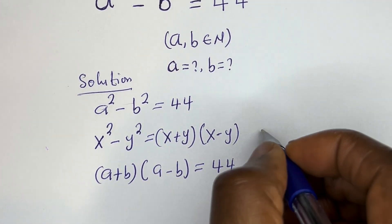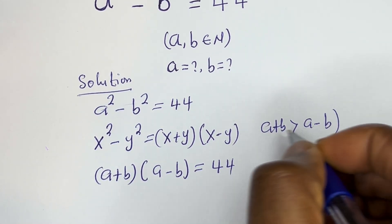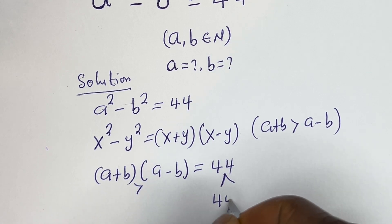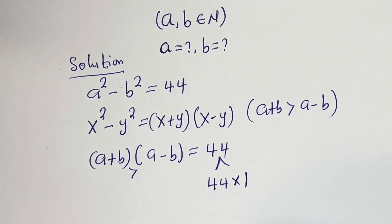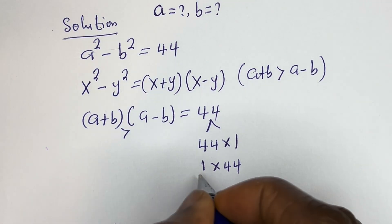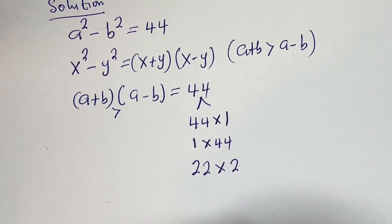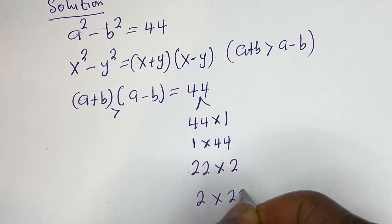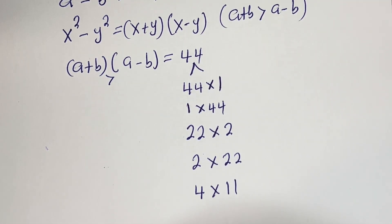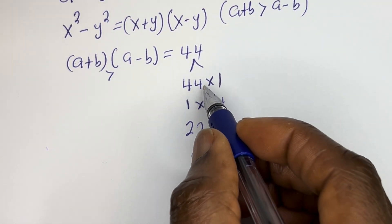From here, note that a plus b is greater than a minus b. We need to look for the factor pairs of 44. 44 is a product of 44 × 1, 22 × 2, and 4 × 11. Since a plus b must be greater than a minus b, we check: 44 is greater than 1 — accepted.